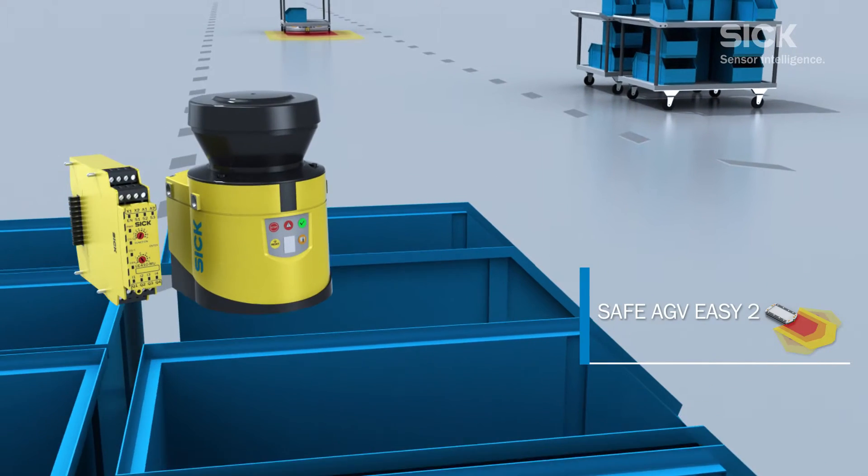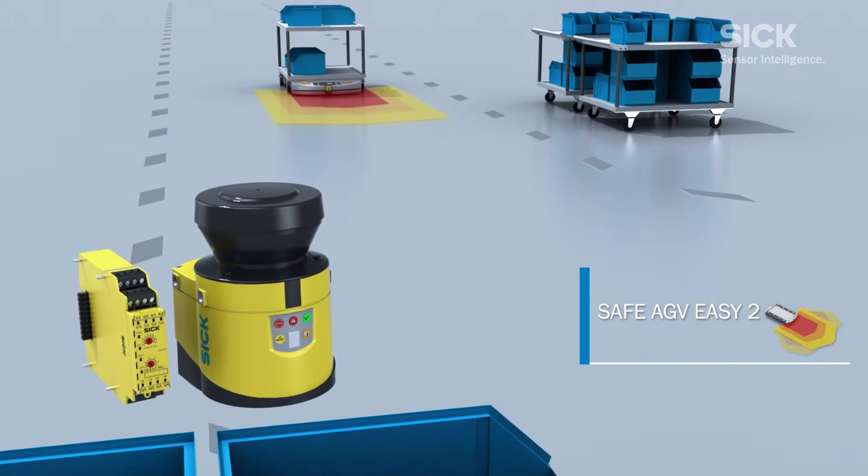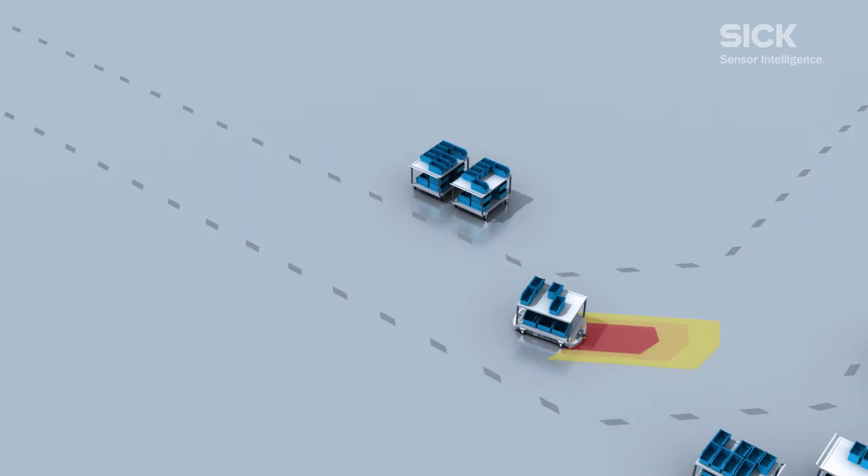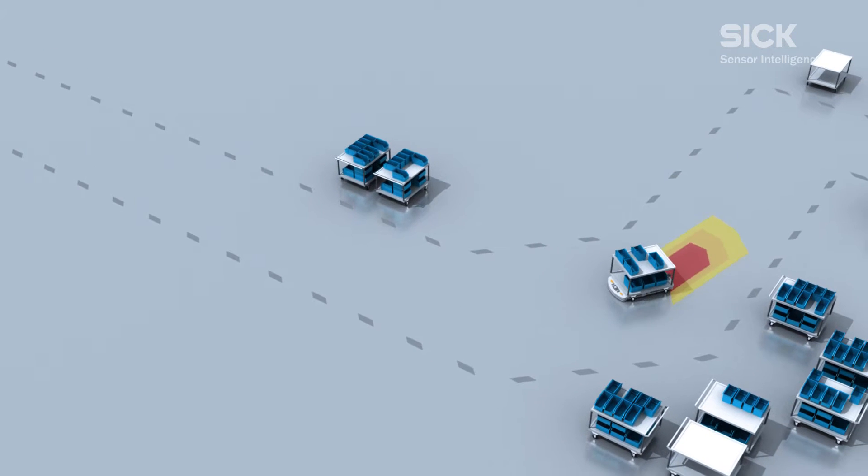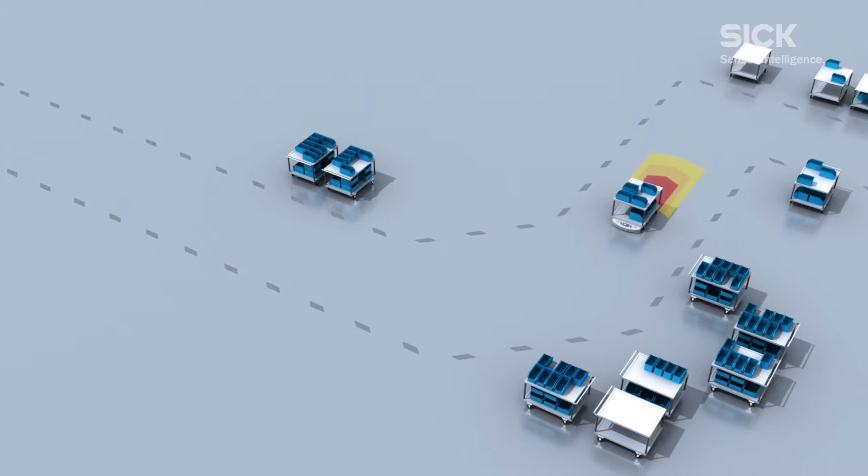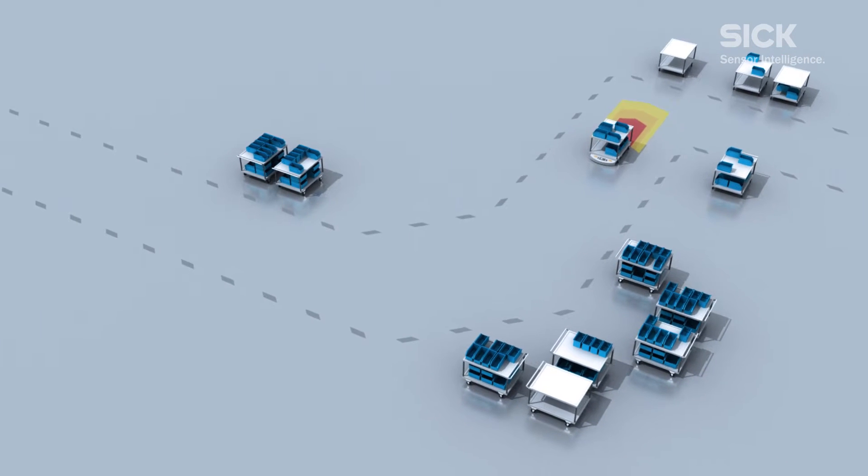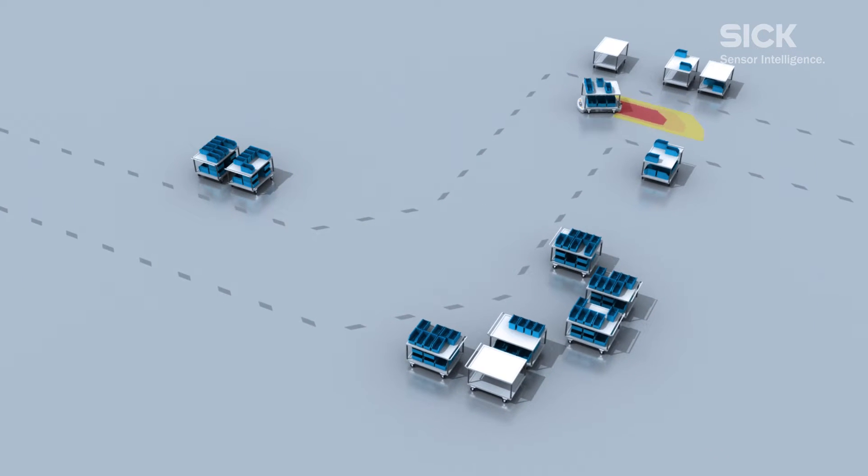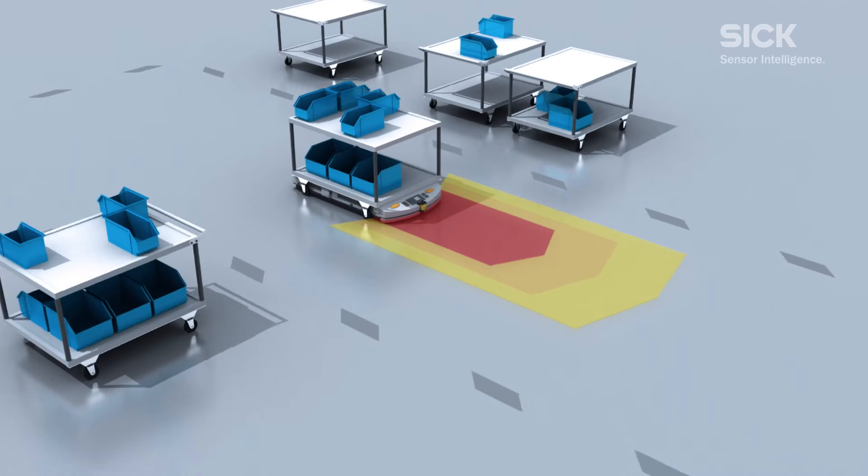For industrial trucks with one main direction of travel, S300 Professional and Flexi Classic, docking and quick cornering are possible thanks to the S300 Professional safety laser scanner's individual field switching. The easy-to-configure Flexi Classic safety controller keeps the safety chain closed.